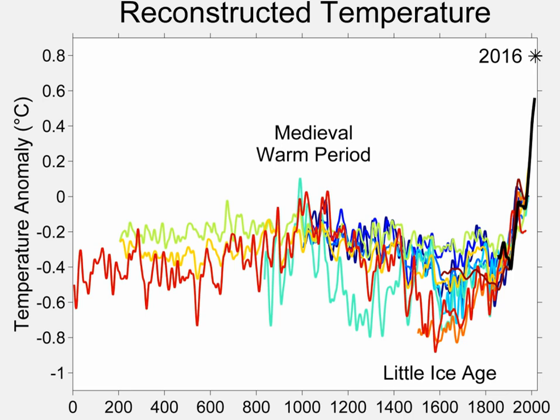The result is a picture of relatively cool conditions in the 17th and early 19th centuries and warmth in the 11th and early 15th centuries, but the warmest conditions are apparent in the 20th century. Given that confidence levels surrounding all reconstructions are wide, virtually all reconstructions are effectively encompassed within the uncertainty previously indicated in the TAR. The major differences relate to the magnitude of past cool excursions, principally during the 12th to 14th, 17th, and 19th centuries.